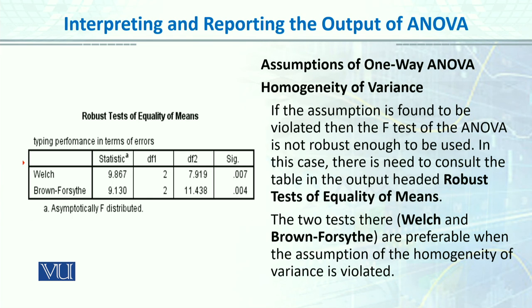If the homogeneity of variance assumption is not fulfilled, ANOVA is a robust test with many provisions, but if the assumption is found to be violated, the F-test of ANOVA is not robust enough to be used. In this case, you need to consult the table in the output headed 'Robust Tests of Equality of Means.' The two tests there — Welch and Brown-Forsythe — are preferable when homogeneity of variance is violated. You can report the value of 9.87 or 9.13, any value or both, except the standard F-table value.